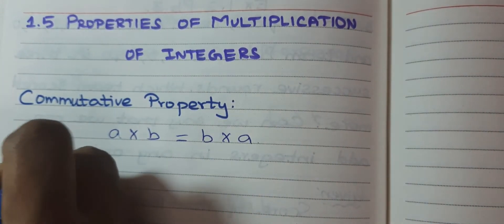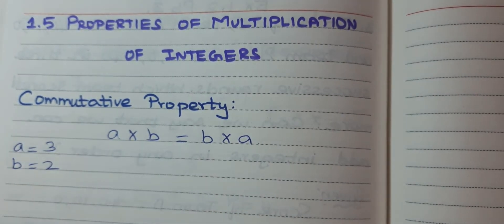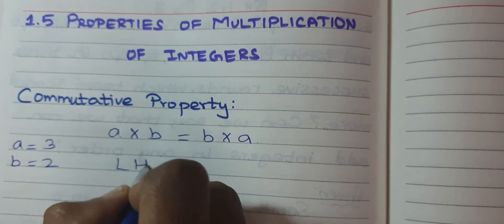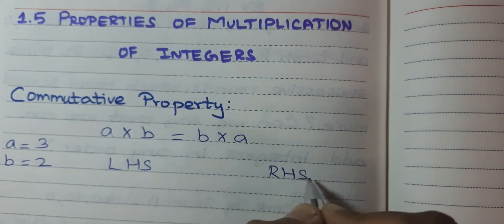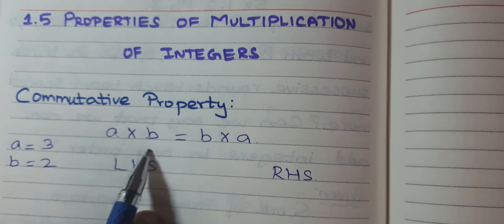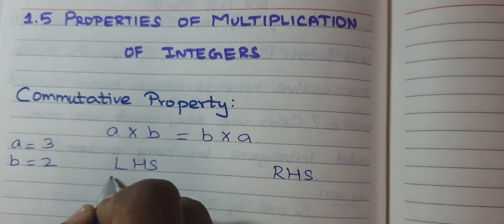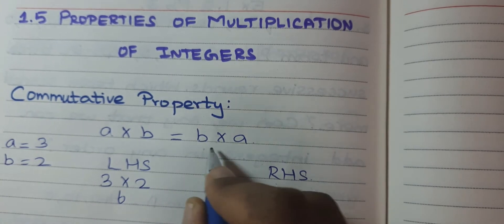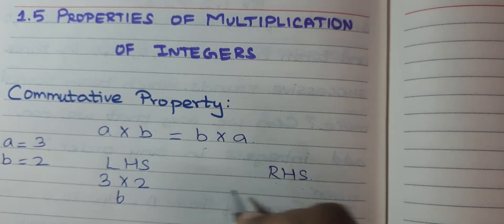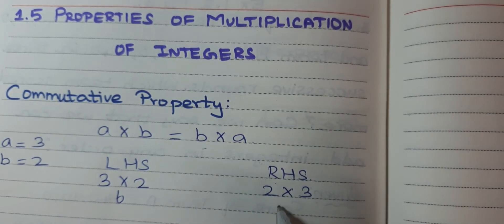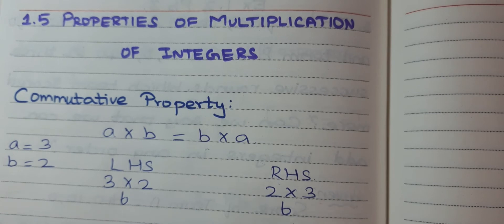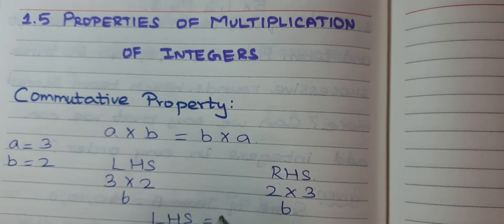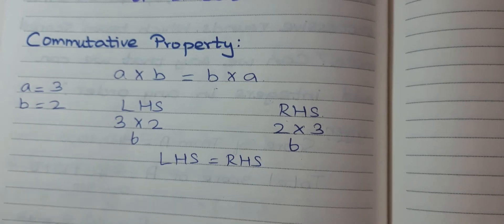Let me take the value of A = 3, B = 2. The LHS side is A × B, so instead of A apply 3, instead of B apply 2: 3 × 2 = 6. The RHS side is B × A, so 2 × 3 = 6. LHS equals RHS, so the condition is satisfied. This is the commutative property.